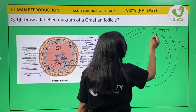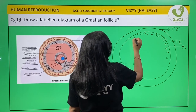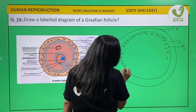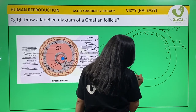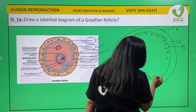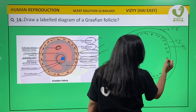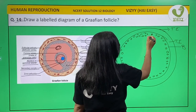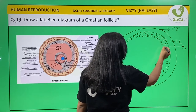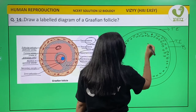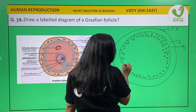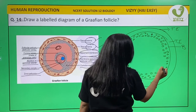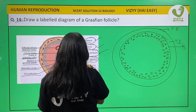The theca interna — start making it, it should look something like this. Students, please be conceptually right and make a neat diagram. Now we are done with the granulosa membrane — the membrana granulosa.